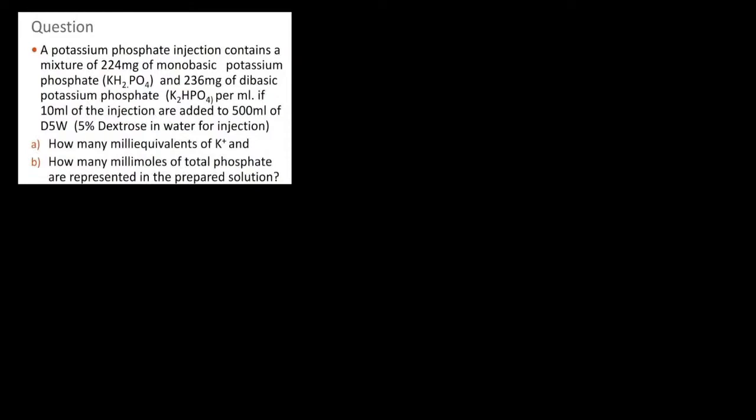The question states that a potassium phosphate injection contains a mixture of 224 milligrams of monobasic potassium phosphate and 236 milligrams of dibasic potassium phosphate per milliliter. If 10 milliliters of the injection are added to 500 milliliters of D5W — that is, 5% dextrose in water for injection — how many milliequivalents of potassium (A) and how many millimoles of total phosphate (B) are represented in the prepared solution?